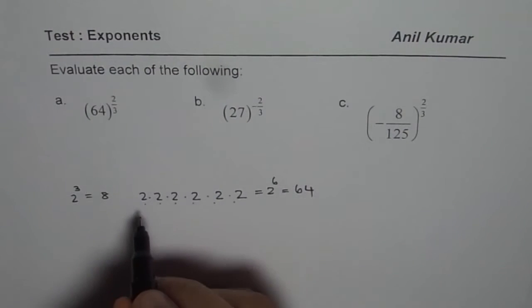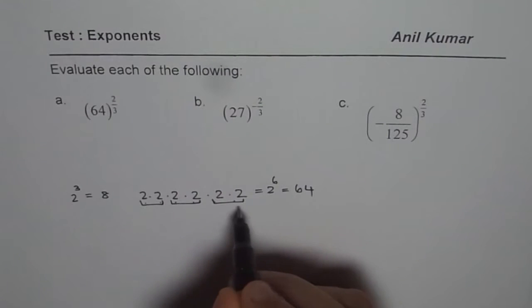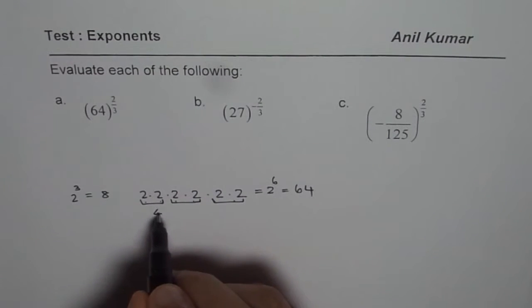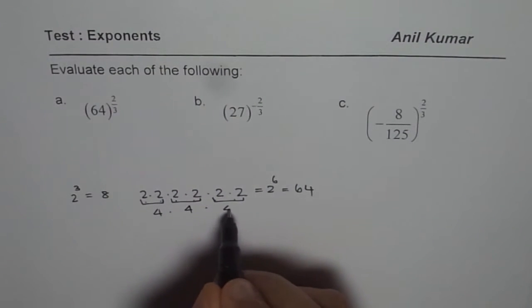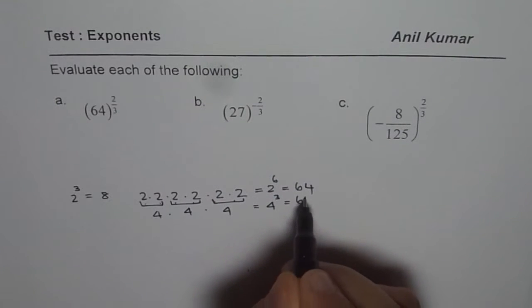The other way of writing 64 is we could combine these 2's. We get 4 cubed. Do you see? It is 4 times 4 times 4. We could write this as 4 cubed equals 64.